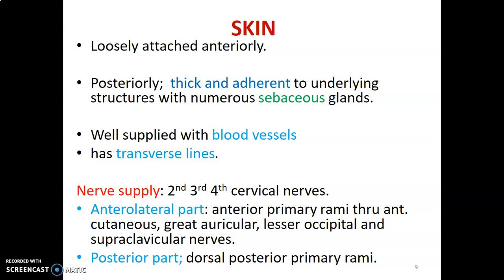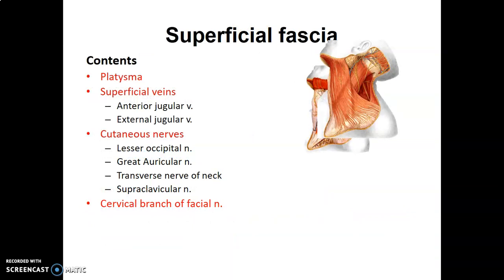The main content of the superficial fascia of the neck is the platysma muscle. Apart from platysma, we also have superficial veins such as anterior jugular veins and external jugular veins, and cutaneous nerves: lesser occipital, greater auricular, transverse cervical nerve, and supraclavicular nerve. These are the four cutaneous nerves in the superficial fascia of the neck. The cervical branch of the facial nerve is also found here, as it innervates the platysma.